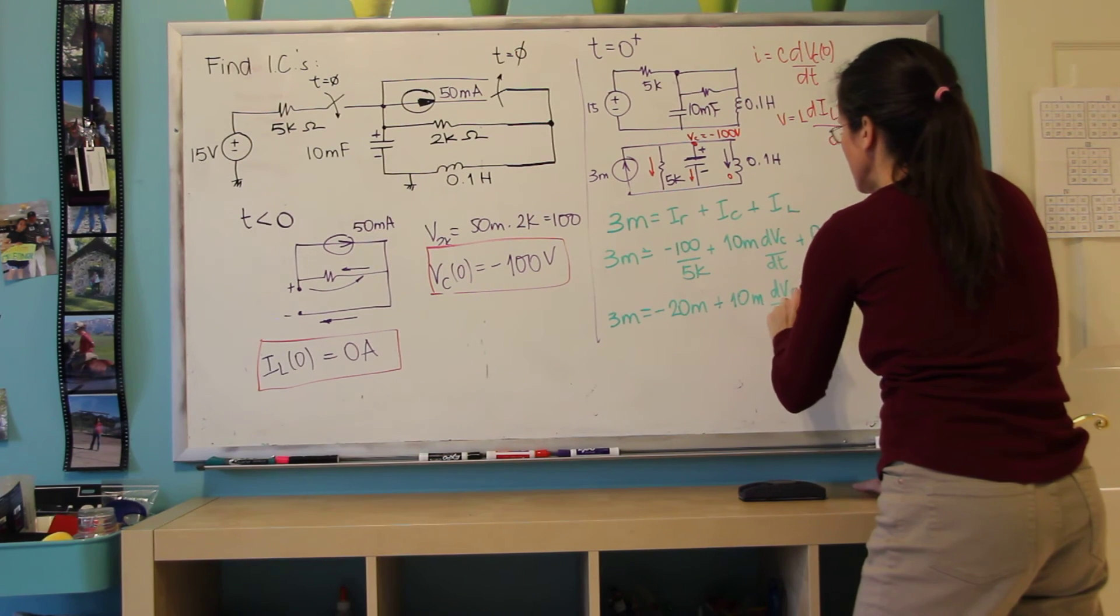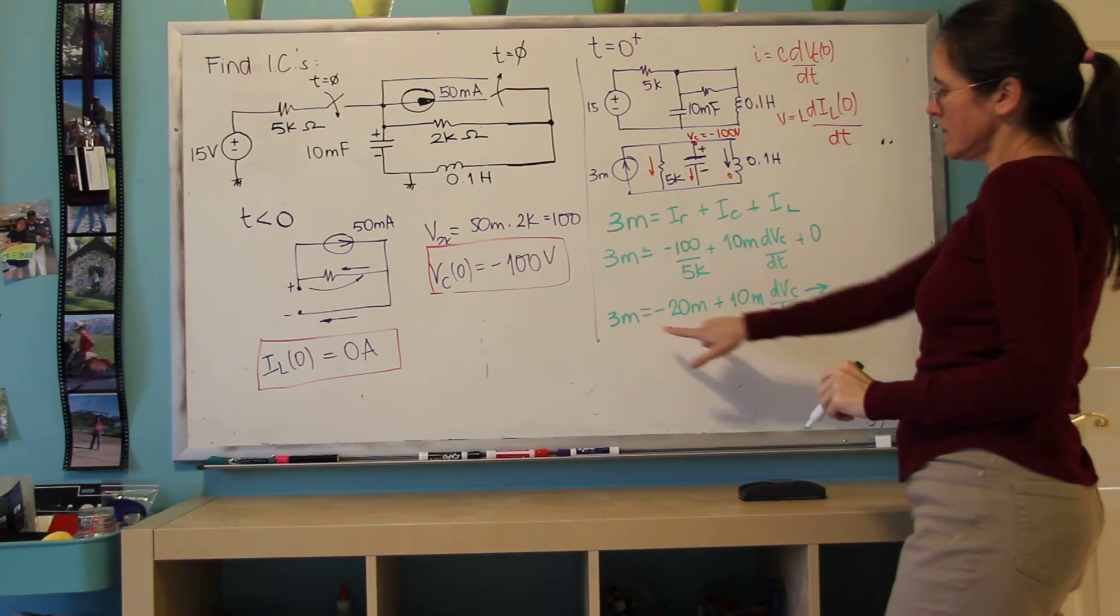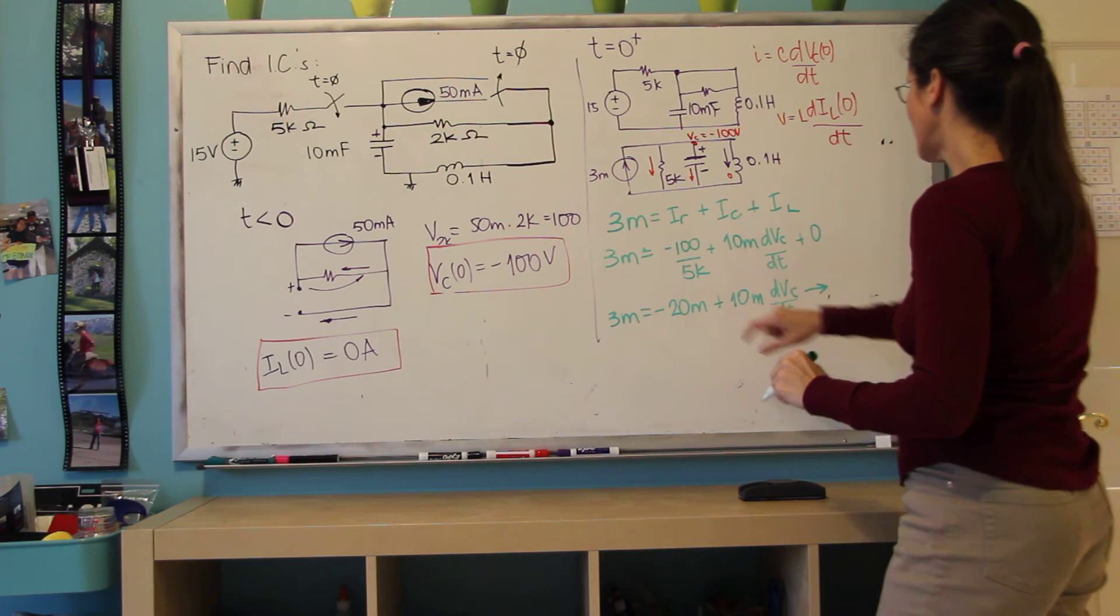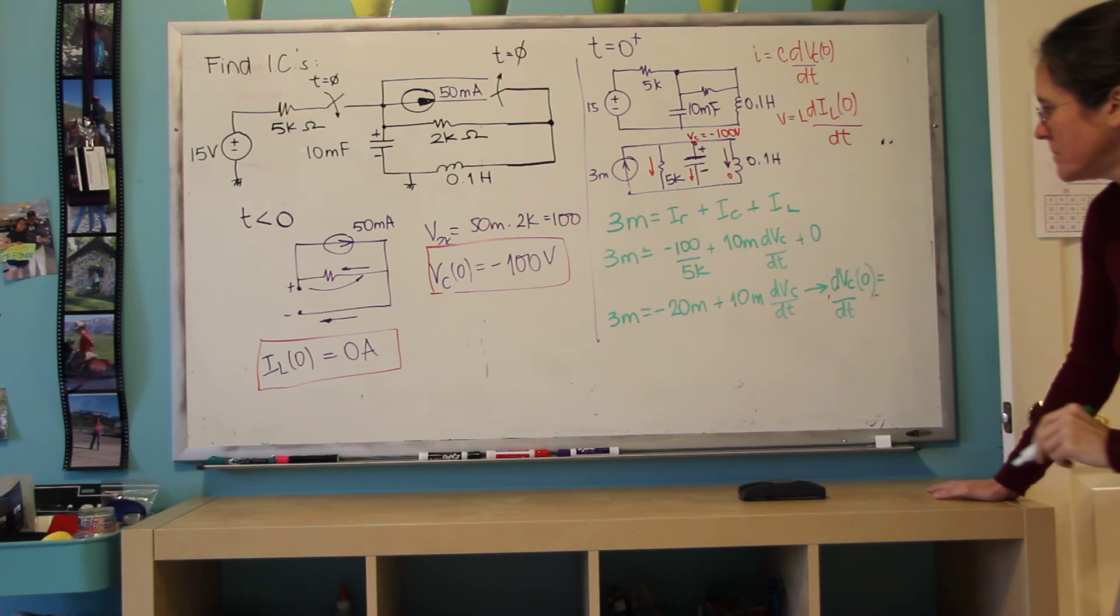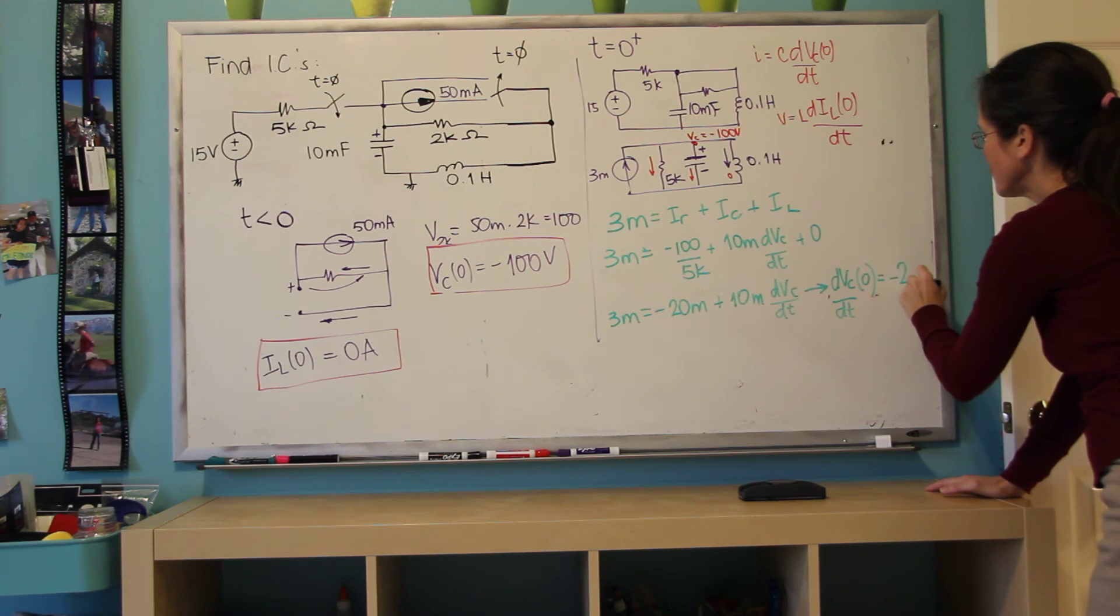And this is minus 23 divided by 10. So dvc dt at zero is minus 2.3 volts per second.